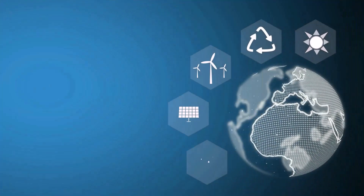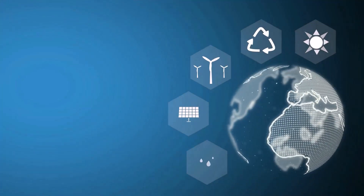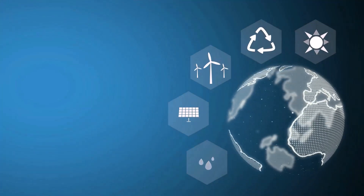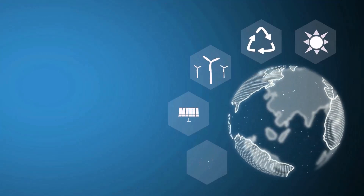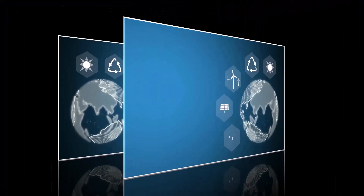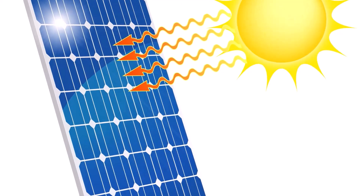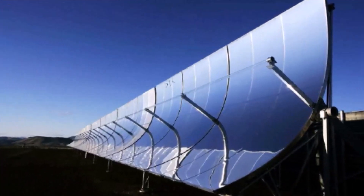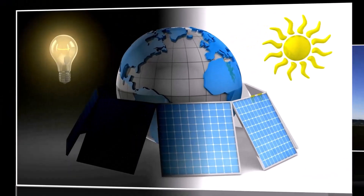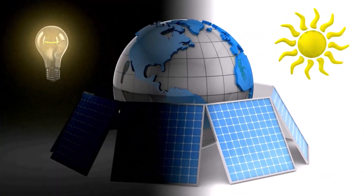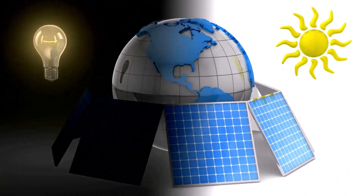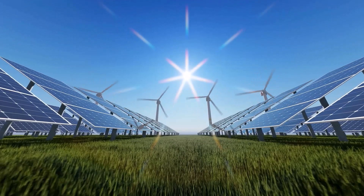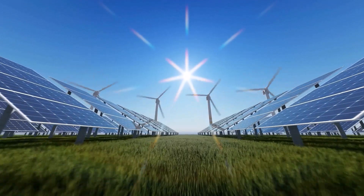In the past, solar technology has used two different ways to turn solar energy into electricity. One of the ways is to use photovoltaic panels or mirrors that focus the sun's rays. Solar energy can be used in the same ways as regular electricity, but it is renewable, doesn't run out, and might be cheaper than other types of electricity.